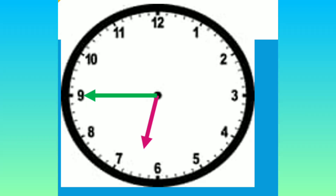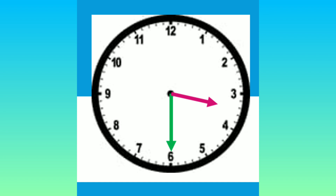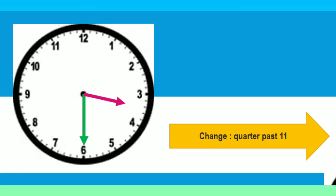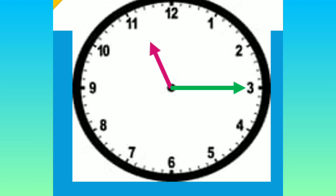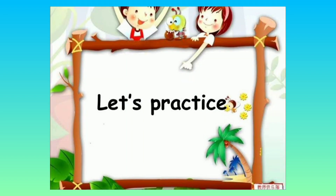The time is six forty five — six hours forty five minutes. Very good! Look at the clock. The time is three thirty — three hours thirty minutes. If you change to quarter past eleven, what time is it? The time is eleven fifteen — eleven hours fifteen minutes. Good!